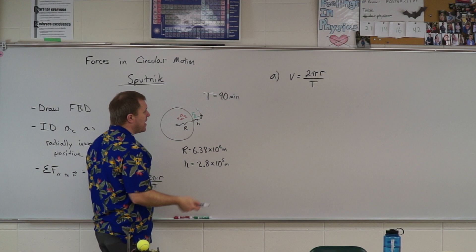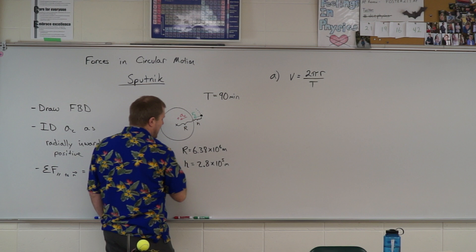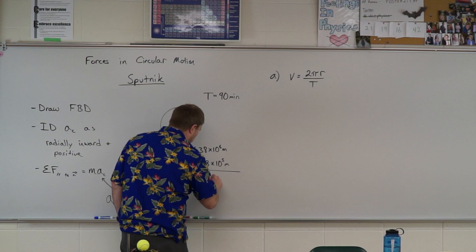So in order to find that, I need to add the radius of the Earth and the height provided, so I can add those two numbers together to get the radius of that orbit. And I get 6.66 times 10 to the 6th meters here.